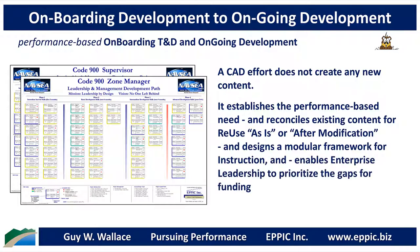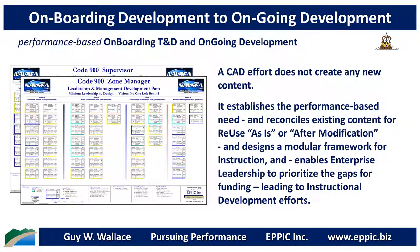A training and development path created as a result of the design phase leads to a prioritization phase where executives and leaders of the enterprise determine the priorities given the gaps that exist. The development of a path, or paths, enables leadership to visually see what training and instruction exists already as-is or needing modification, and presents the gaps in that total system of instruction for prioritization. Those gaps that aren't addressed are left to informal and social means for learning.